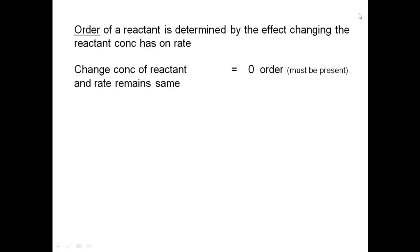The order of a reactant is determined by the effect that changing the reactant concentration has on rate. If you change the concentration of the reactant and the rate remains the same, then it's zero order — that species must be present for the reaction to go, but it has no effect on rate. Essentially, if you double the concentration and multiply by the rate, you still get the same rate, because anything to the zero power is one: 2⁰ = 1.